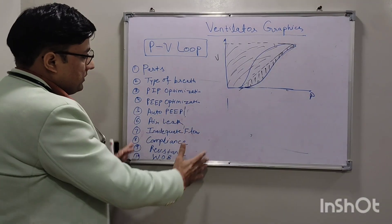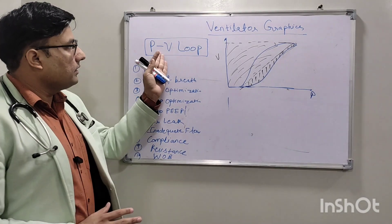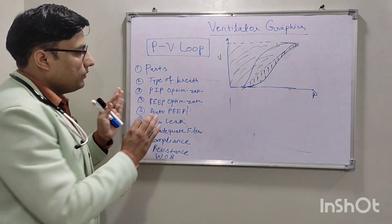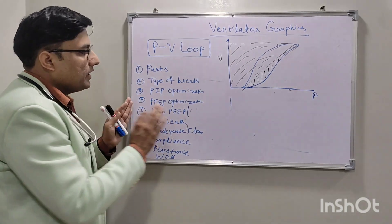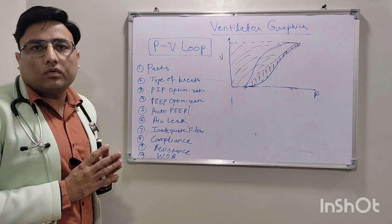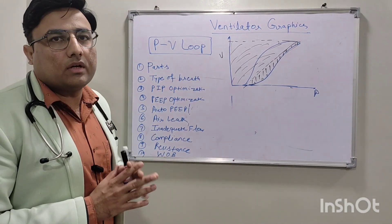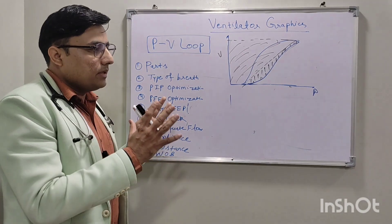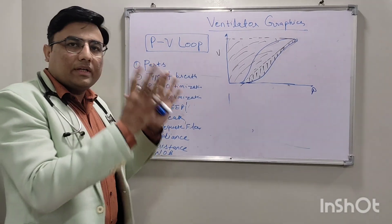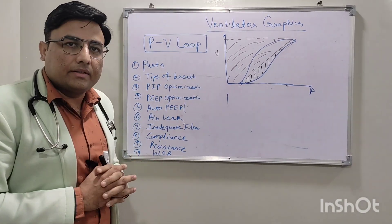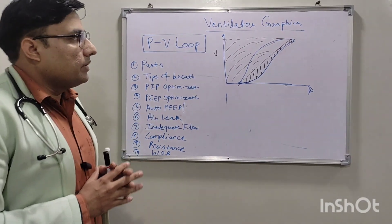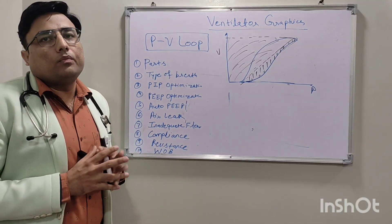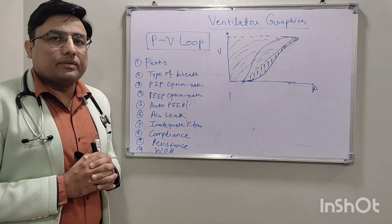So many things can be assessed by the pressure-volume loop. This is the second most important loop after the flow-time curve, and it should be kept on the ventilator screen. In the next class, we will discuss the flow-volume loop. Thank you.